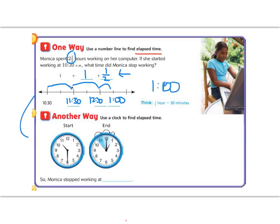Let's try this another way. We can also do elapsed time on a clock. So if it was 10:30 when she started, this is what the clock looked like at the start. So then her hour hand moved 1, 2, and a little bit extra. So that means that Monica stopped working at 1 o'clock. I personally like to use the number line better than the clock, but you decide which way works best for you.